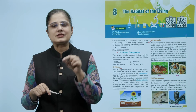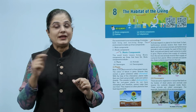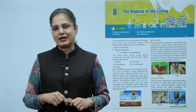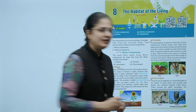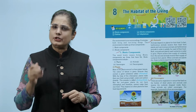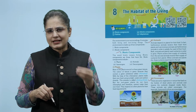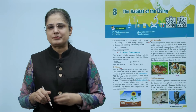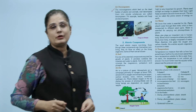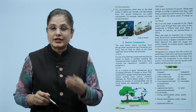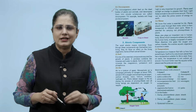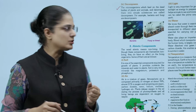Next come the scavengers. There are some organisms in nature that feed on the bodies of dead plants and animals and receive the nutrients trapped inside them. Animals like hyena and vulture are examples of scavengers. Next come the decomposers - the microorganisms which feed on the dead bodies of plants and animals and decompose them into simple substances are called decomposers. Bacteria and fungi are decomposers.